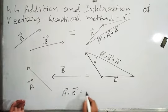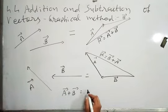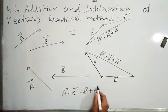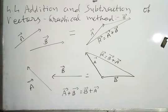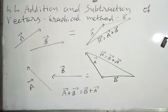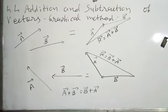This demonstrates the commutative law of vector addition. Vector A plus vector B is always equal to vector B plus vector A. This is called the commutative law.